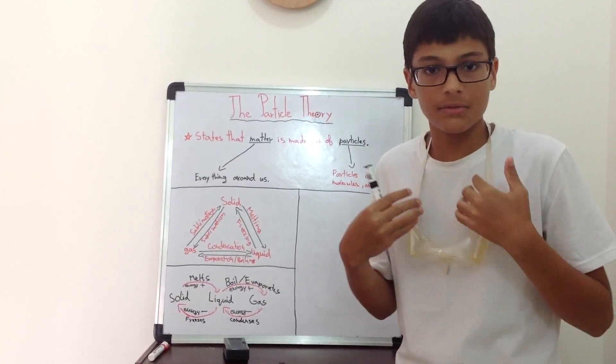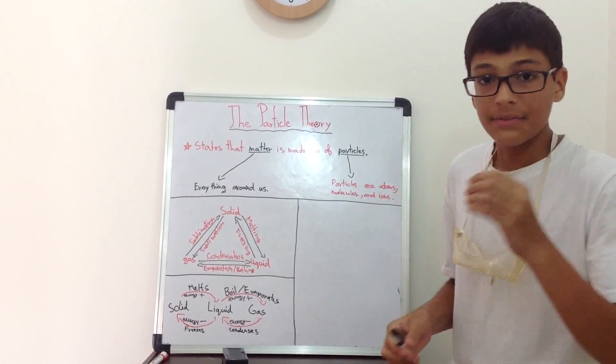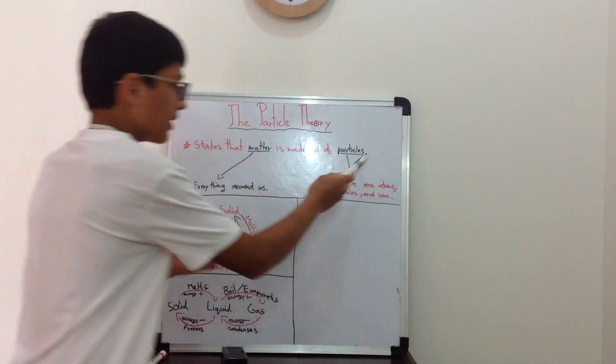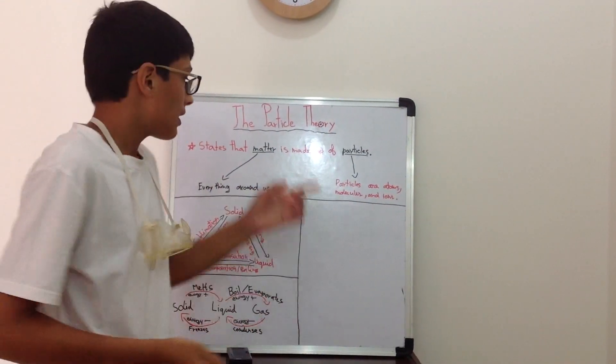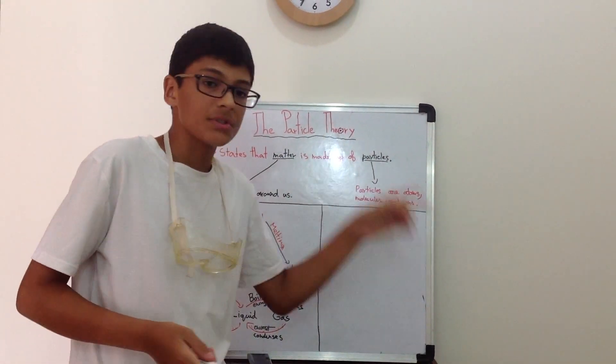Everything we see around us, even ourselves, we are made up of matter. And this matter is made up of particles. And these particles are atoms, molecules, and ions.